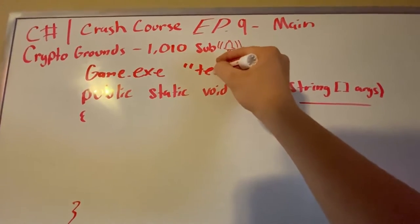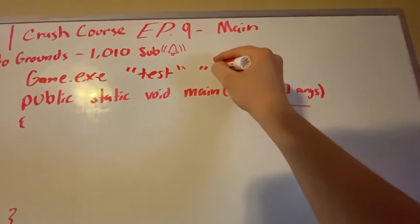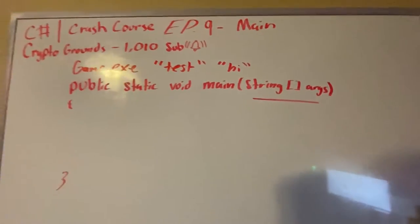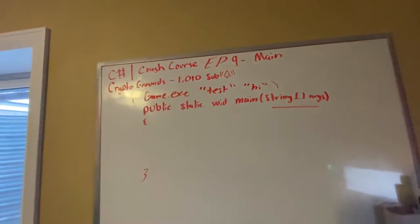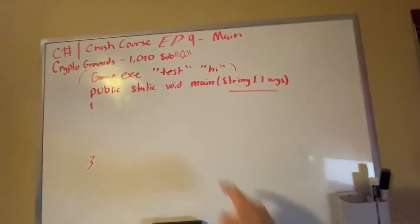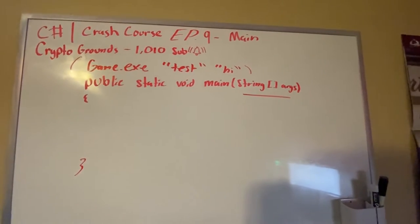Or we could put, you know, we can do 'hi'. Let's say we run this in our console: game.exe test hi. Basically, it'll put that into an array args with 'test' and 'hi'.